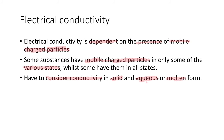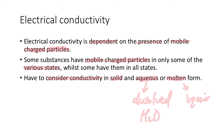You have to consider the conductivity in solid and aqueous or molten form. Aqueous means that it's dissolved in water, and molten means it's in liquid or melted form. So the key question is: does it have mobile charged particles? If it does, it will conduct electricity; if it doesn't, it won't — and we have to consider this in the different states.